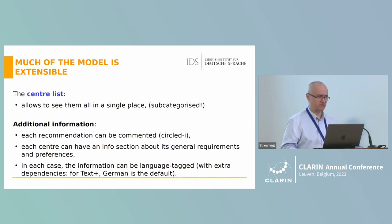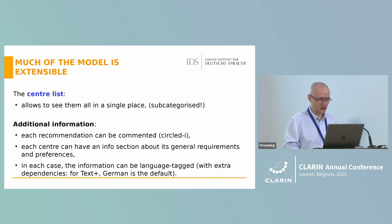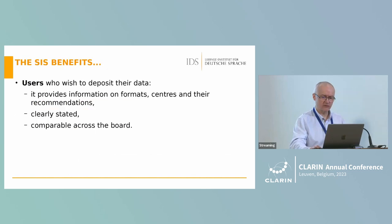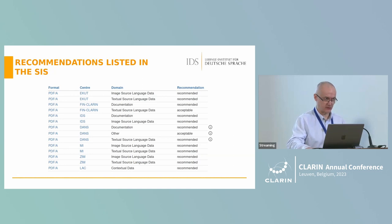Finally there is the blue cylinder containing center information, which provides a way to look at centers all together and to subcategorize them in various ways. We also provide additional information — Elisa mentioned those small icons in the format recommendations list. They are actually pop-ups with additional comments on a particular format, so a center may want to narrow down or expand on its recommendation.